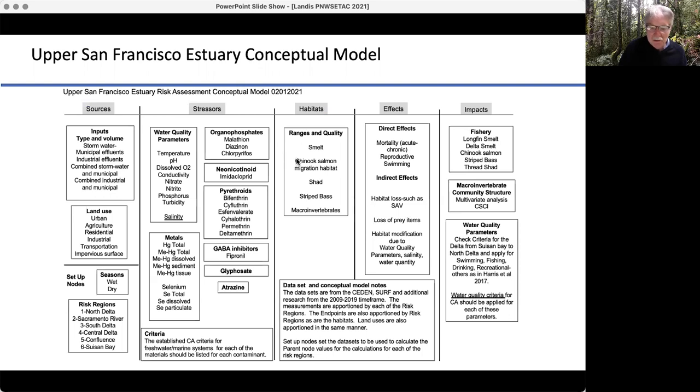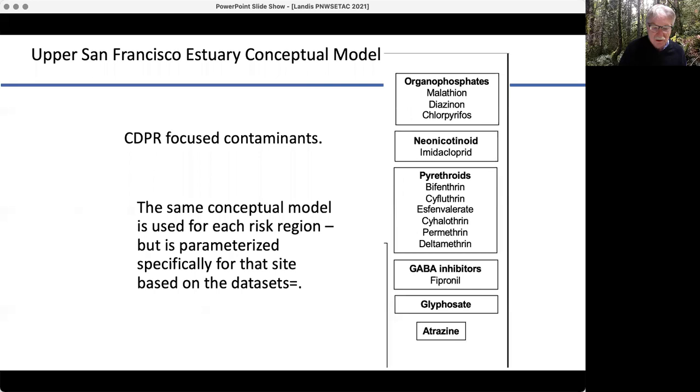The habitats, the range quality for the things that we care about, like smelt and striped bass. Direct effects, such as direct mortality, but also indirect effects, such as habitat loss. And we have impacts to different categories. Our fisheries, like the Chinook salmon, striped bass, macroinvertebrate community structure, water quality parameters, and these have criteria that we're supposed to meet, and we're going to calculate how often those criteria are met.